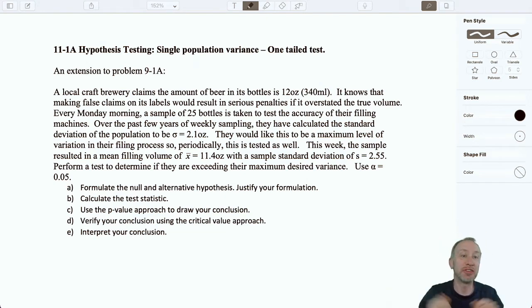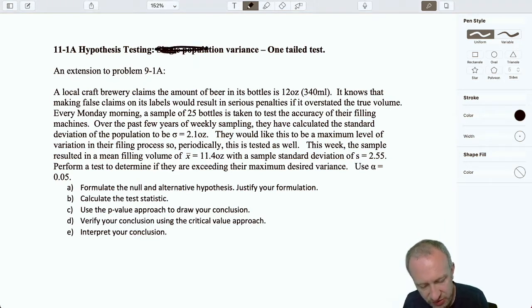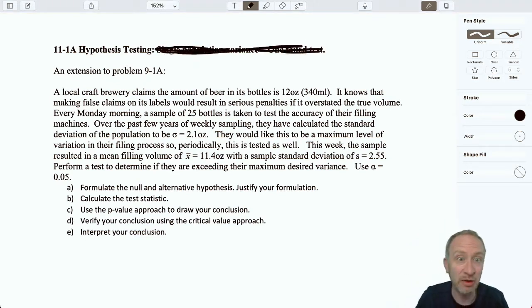Hello everybody, welcome to our first exercise in module 11, looking at single population tests on variance. This one is going to be a one-tail test, but we're going to make sure that we can figure that out for ourselves without being told.